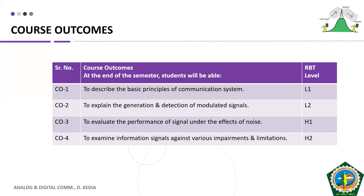After analyzing the performance of signals, we can recommend which particular signal performs better under a particular noise condition. Course outcome number four is that students will be able to examine information signals under various impairments and limitations. These course outcomes are governed under Revised Bloom's Taxonomy levels L1, L2, H1, and H2.